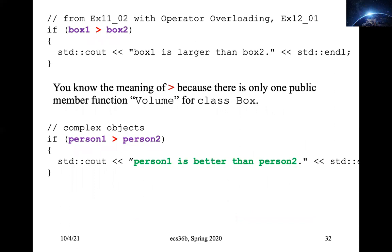I want to be careful about operator overloading. Overloading in general means the same function name has a different variety of functions depending on the function signature. Operator overloading means an operator may also have different functions depending on the type of the variable — the function signature determines which one gets called.